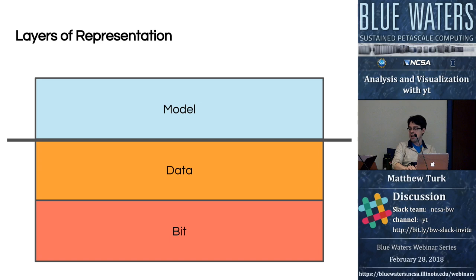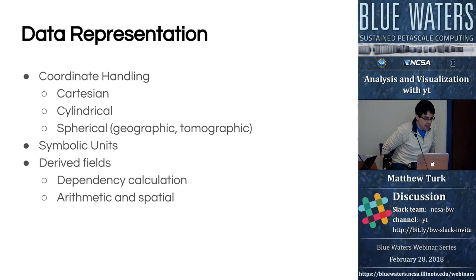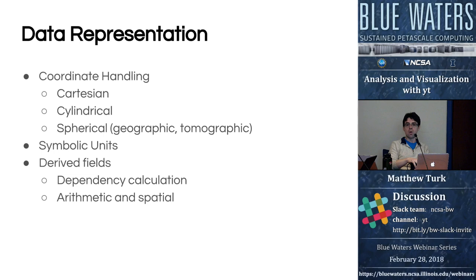As we move up the layers of representation to the distinction between the model and the data, we start to think about how the data is represented. This is where aspects like coordinate handling come in — being able to manage the spatial extent of data as Cartesian, cylindrical, spherical, geographic, or tomographic coordinates.